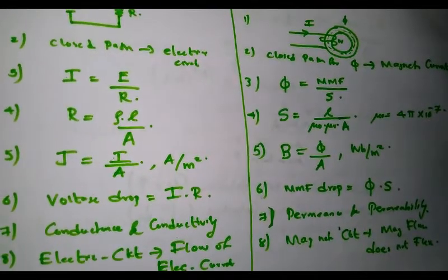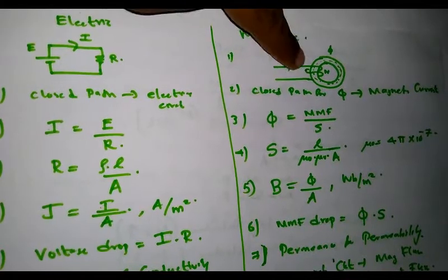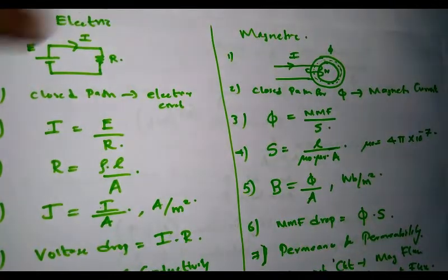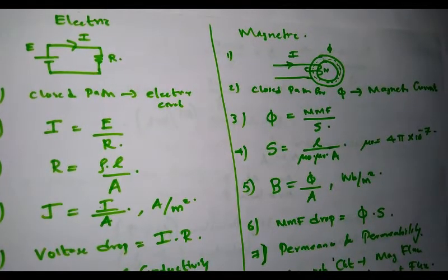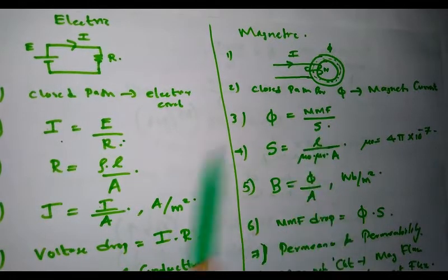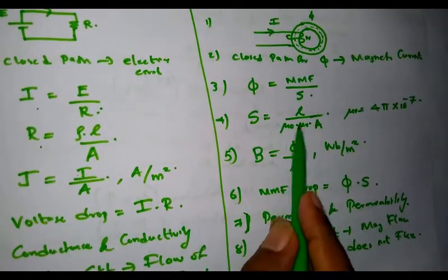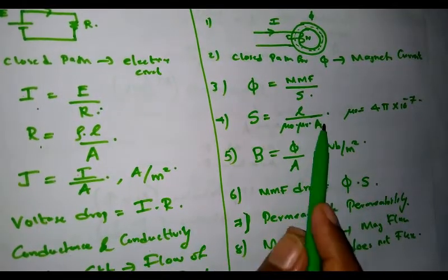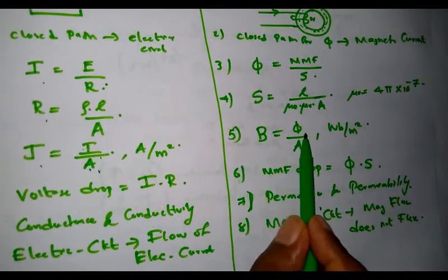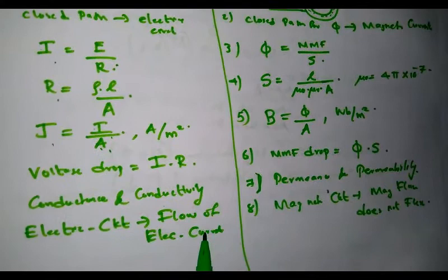To summarize: the electric circuit is a simple representation with a battery and resistor, and the magnetic circuit is a coil-wound core. The closed path for electric current is called an electric circuit, and the closed path for magnetic flux is called a magnetic circuit. Current I equals EMF divided by R; flux phi equals MMF divided by reluctance. Resistance R equals rho×L/A; reluctance S equals L/(mu-0 × mu-R × A). Current density J equals I divided by A; magnetic flux density B equals flux divided by area, with unit Weber per meter square or Tesla.